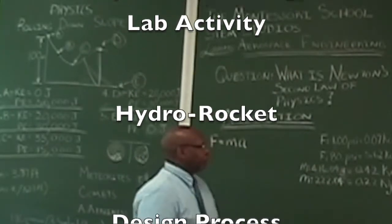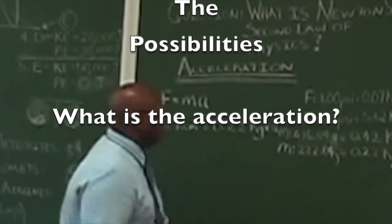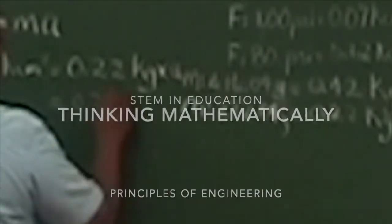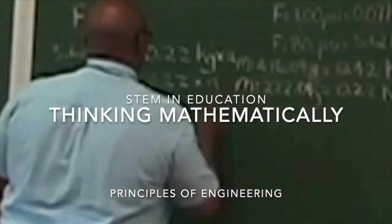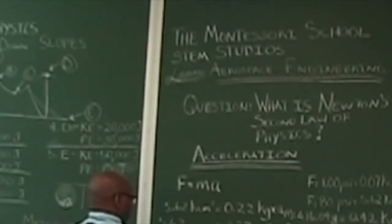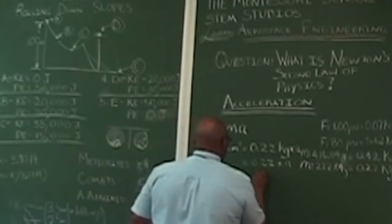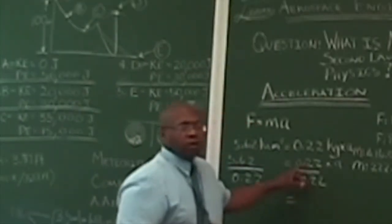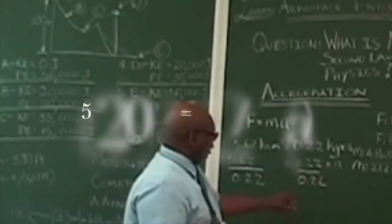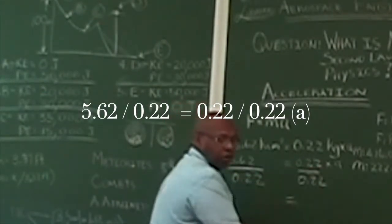We're going to go outside. We're going to launch two hydrorotons. We're trying to find out what is the acceleration. To get 0.2 by itself, because we want to find out what A is going to be — 5.62 divided by 0.22 on both sides. When we look on this side, if we take 0.22 divided by 0.22, we're going to be left with A on this side.